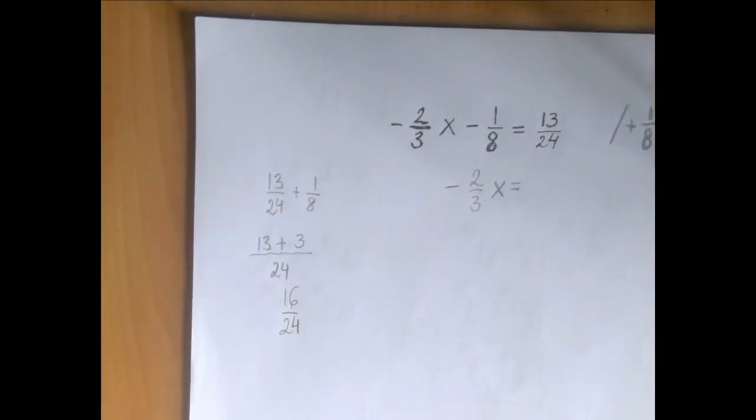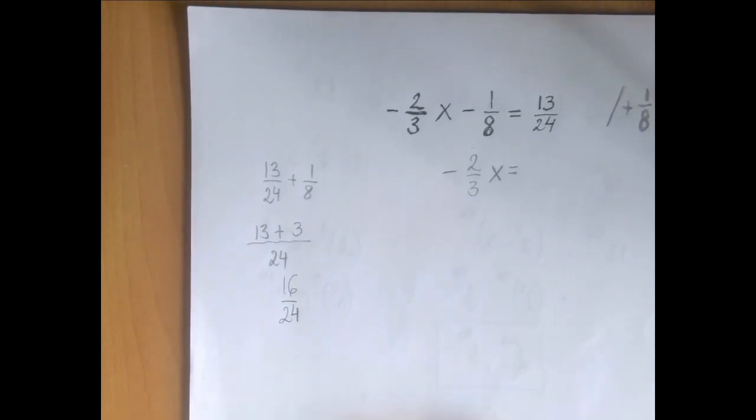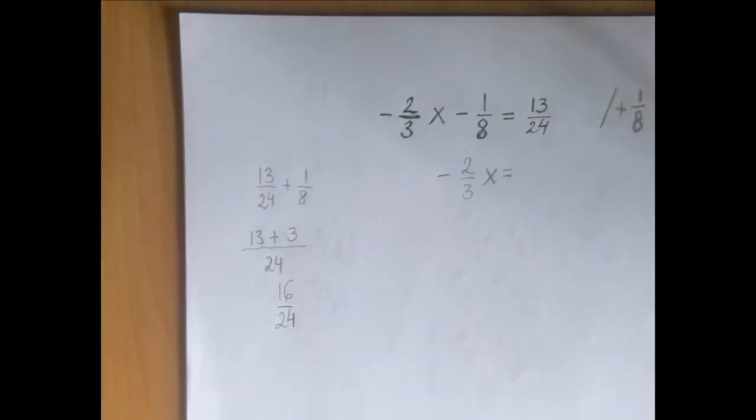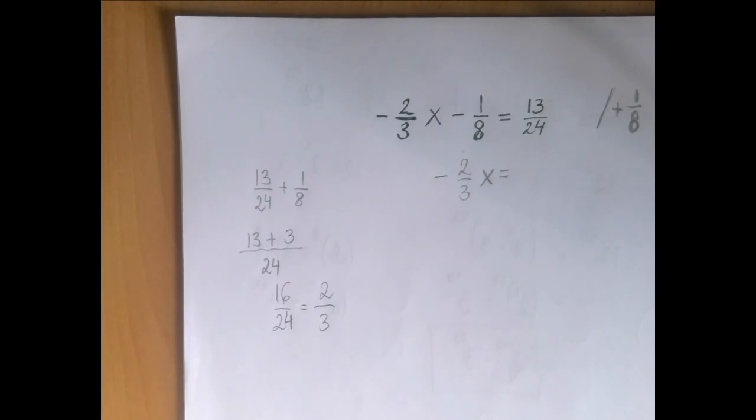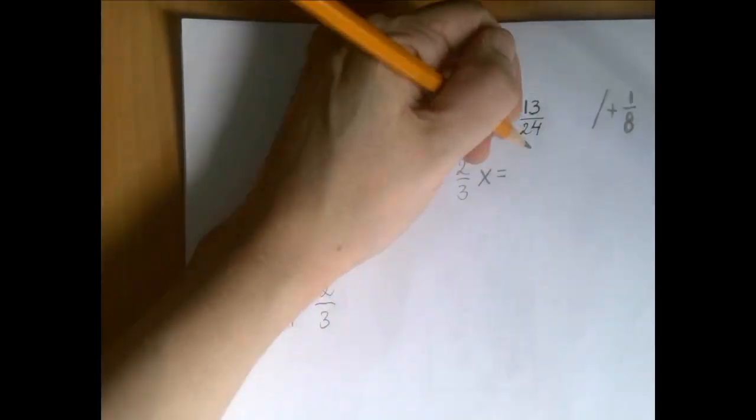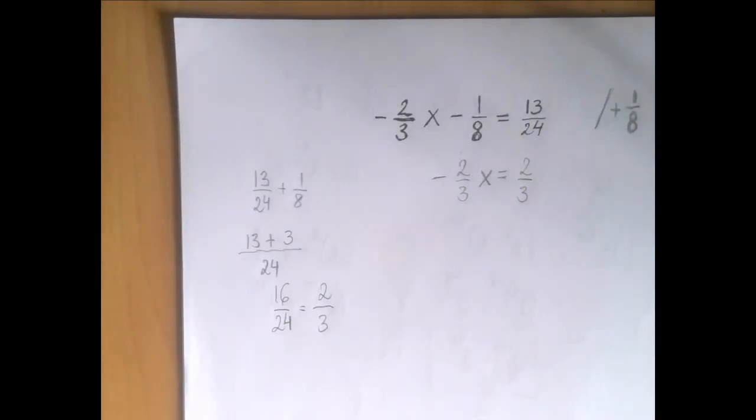Not always, but it is often useful if we notice that a fraction can be simplified so the numbers we're dealing with are smaller. This one both numerator and denominator are divisible by 8. So let's divide out by that. 16 is 2 times 8 and 24 is 3 times 8. So yeah, in light of the rest of the equation this is going to be helpful. The result of our first step is that negative two thirds x equals 2 over 3.